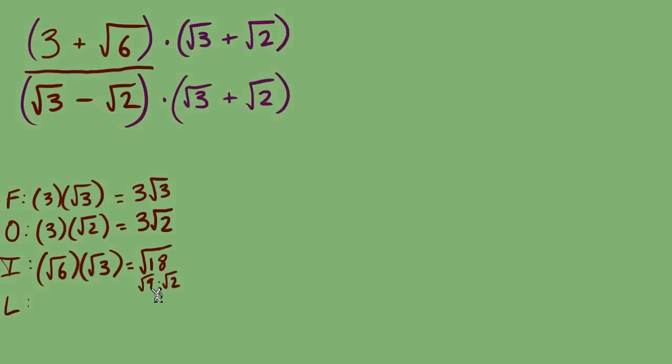Can we simplify that radical? Radical 18 is radical 9 times radical 2, and we know that radical 9 is 3, so that's 3 radical 2. Last terms: radical 6 times radical 2, another pair of radicals we can multiply together to make radical 12. We can simplify that radical, it's radical 4 times radical 3, so that's 2 radical 3.